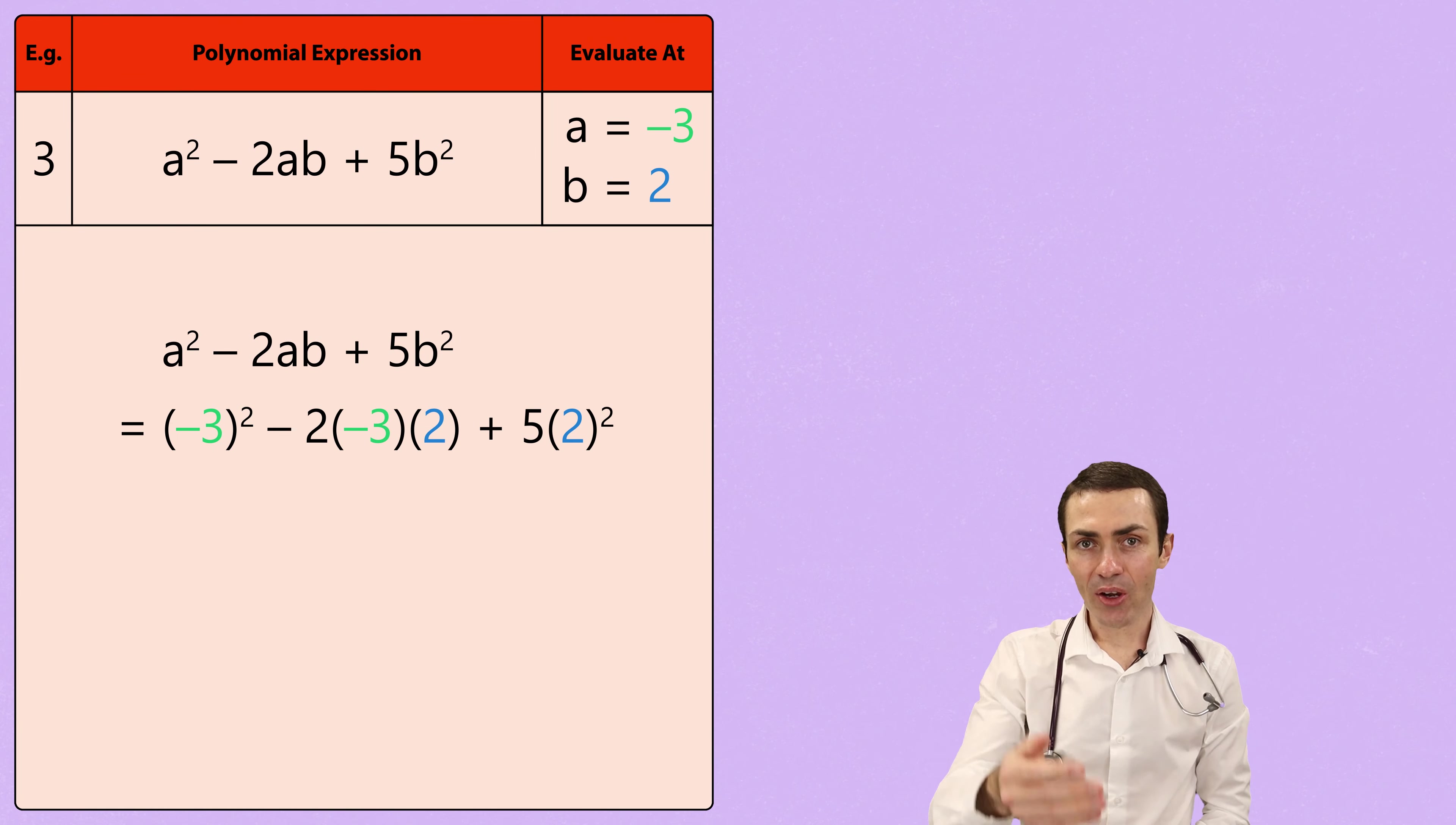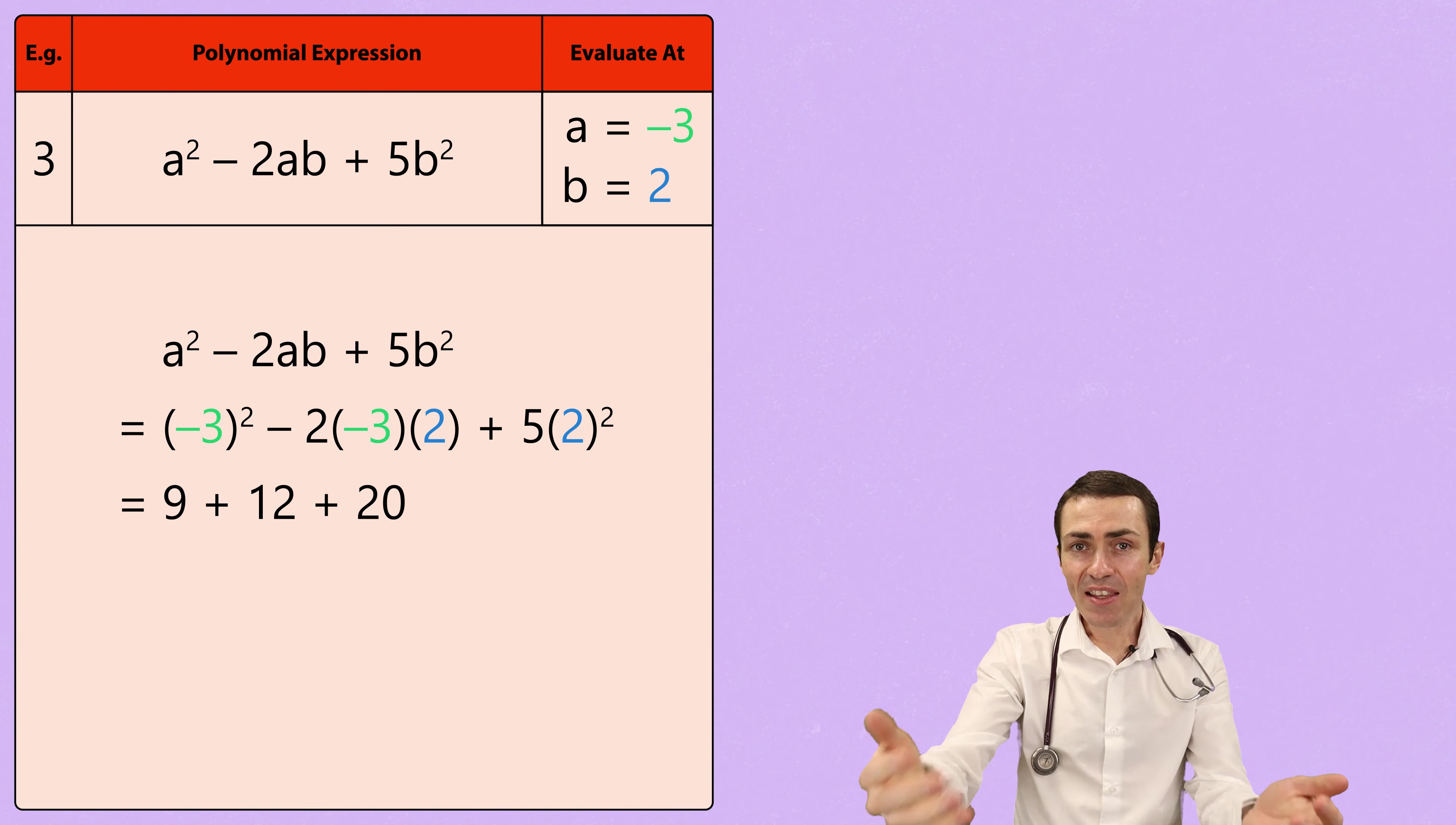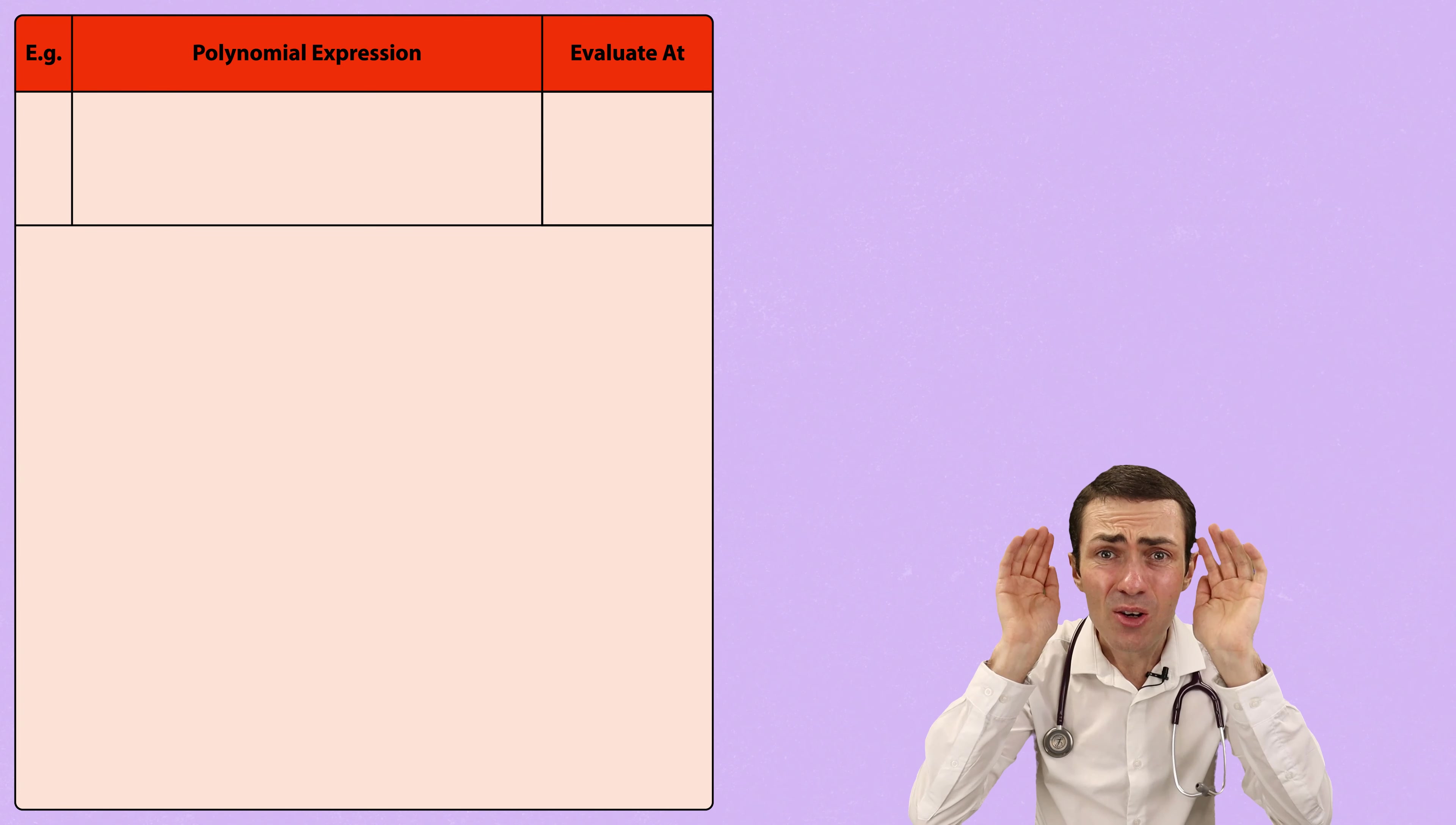Now, negative 3 squared is going to give us 9. Negative 2 multiplied by negative 3 multiplied by 2 will give us 12. Now, 2 squared is 4, and 4 multiplied by 5 is 20. So all we need to do is add these up to get the solution.